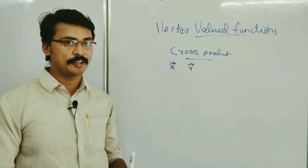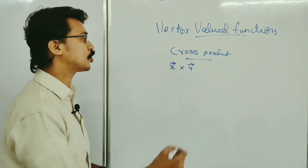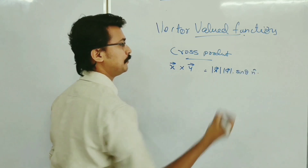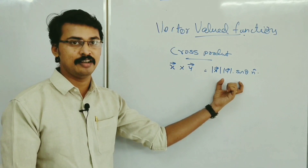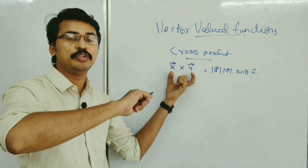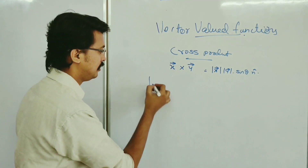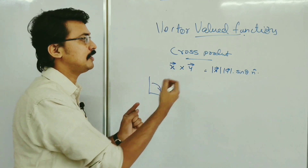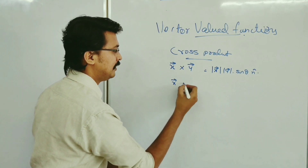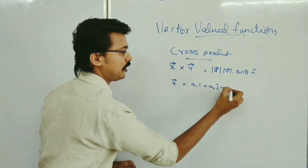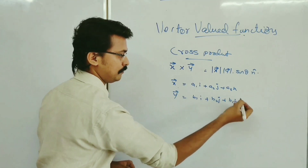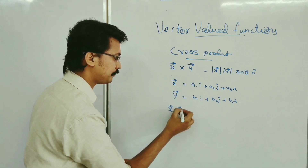Now we have the cross product. x × y equals |x||y|sinθ·n̂, where n̂ is the unit vector perpendicular to both x and y. The cross product gives a vector perpendicular to the plane of x and y, determined by the right-hand screw rule — it gives a direction perpendicular to both vectors.